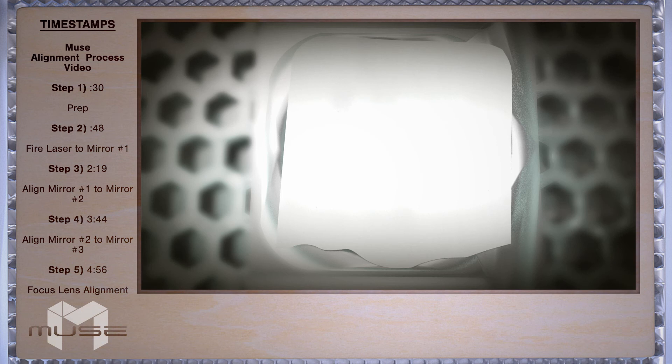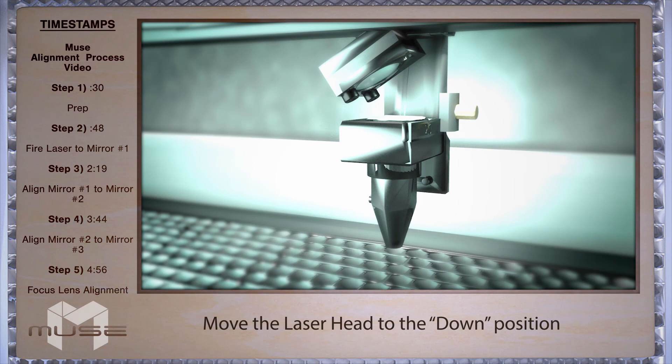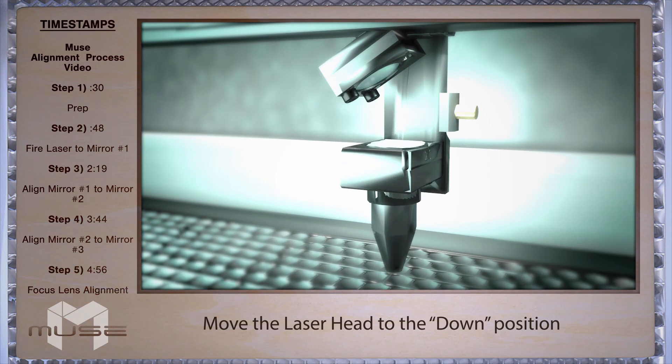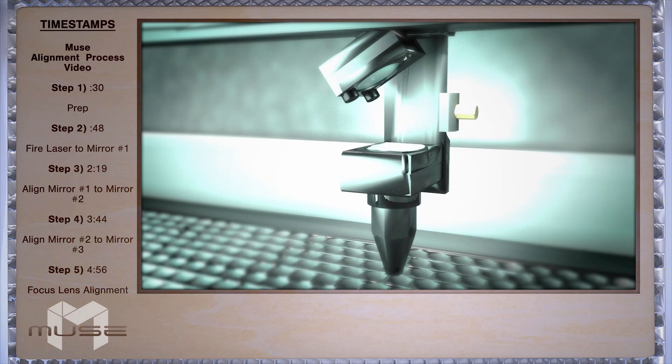Place a piece of thermal paper on top of your lens like we previously have done. Loosen the thumbscrew on your lens and position it so it's as far down as it can go. And now retighten the thumbscrew.